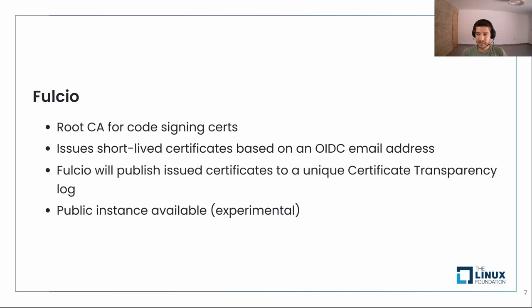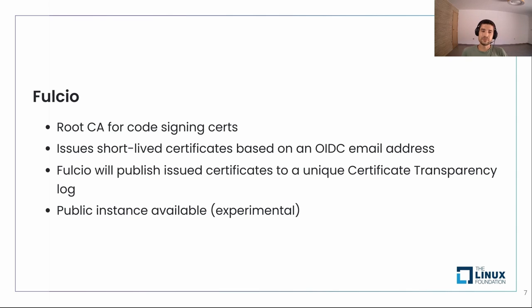OIDC, or OpenID Connect, is an identity layer built on top of OAuth 2, and it allows third-party applications to verify the identity of an end user. The way it works is: we request a certificate from Fulcio, authenticate with one of our OIDC providers, pass this OIDC token to Fulcio, and Fulcio gives us a short-lived certificate. It will also publish this certificate to a transparency log. There is a public instance available hosted by the Sigstore community, though it's still experimental at this moment.